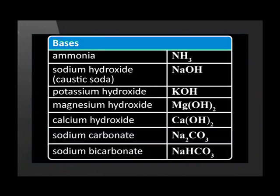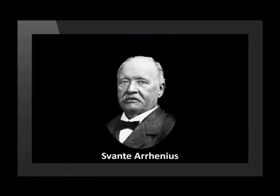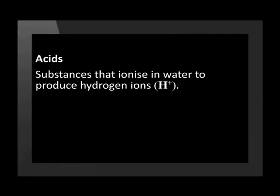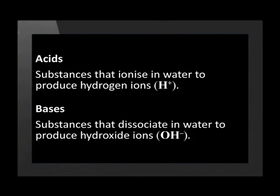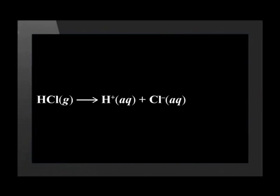Let us now have a look at some acid-base theories. The Swedish scientist Svante Arrhenius introduced an acid-base theory in 1887. He proposed the theory that acids are substances that ionize in water to produce hydrogen ions, and bases dissociate in water to produce hydroxide ions. For example, hydrochloric acid ionizes in water according to this equation to produce H⁺ ions and Cl⁻ ions.